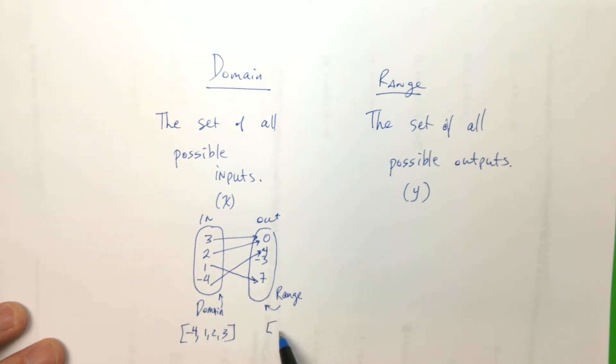And the range would be 0, 4, and 7. Do you see the 3 doesn't have a pair? It's not really an output. So the range is just that. Doing good? Alright.